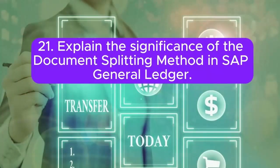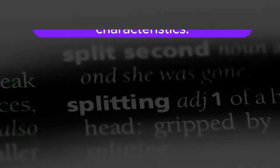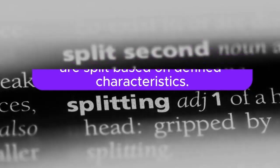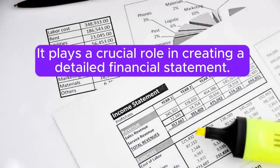Question 21: Explain the significance of the document splitting method in SAP General Ledger. Answer: Document splitting methods determine how line items are split based on defined characteristics. It plays a crucial role in creating a detailed financial statement.